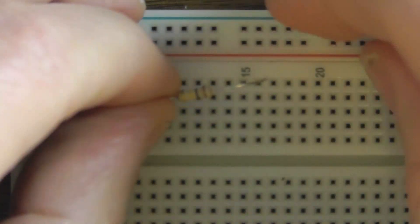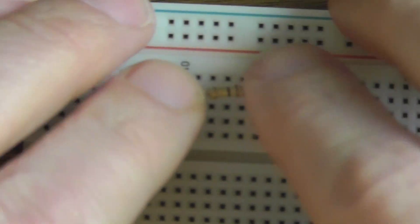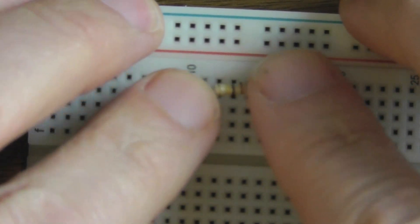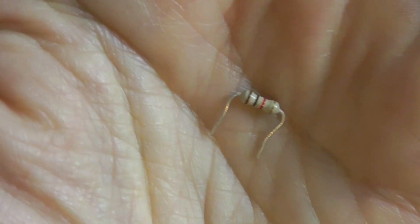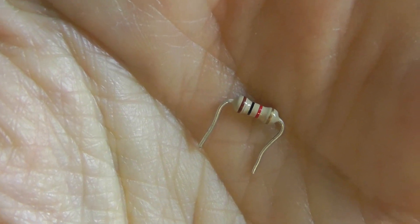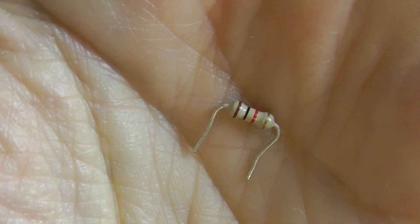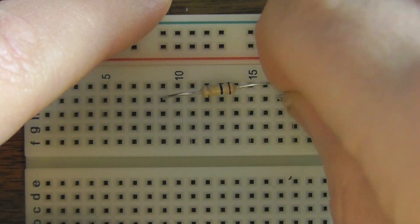And now I can start building everything. I'm going to start off with a 100,000 ohm resistor, which is brown, black, yellow. And I'm going to plug it in the I9 and J17 terminals. And then I'm going to add a 1,000 ohm resistor, brown, black, red. And I'm going to plug that into the I17 and I20 terminals on the breadboard.